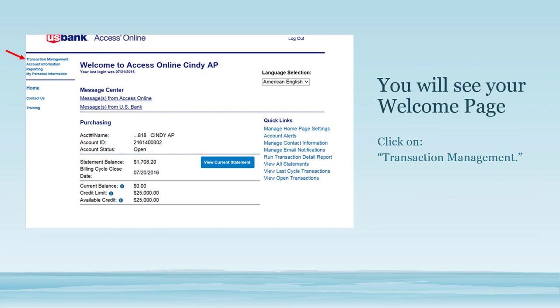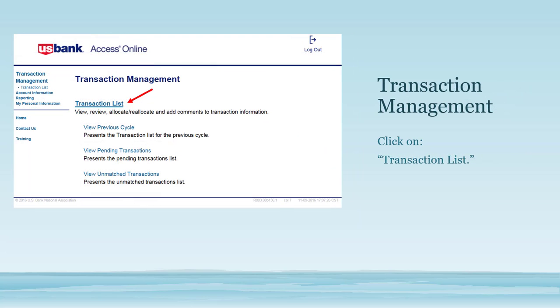You will then see your home page. On the left-hand side click on Transaction Management, then under Transaction Management click on Transaction List.